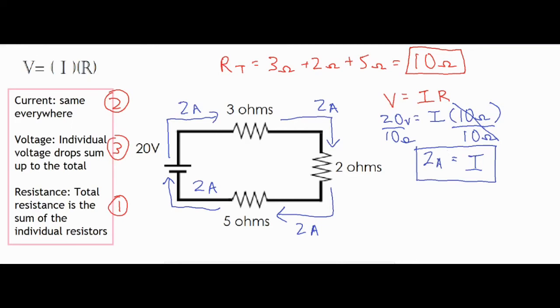And I only have to solve for one current because there's only one loop, one path. So then that means the rate of flow throughout the entire circuit is going to be the same.